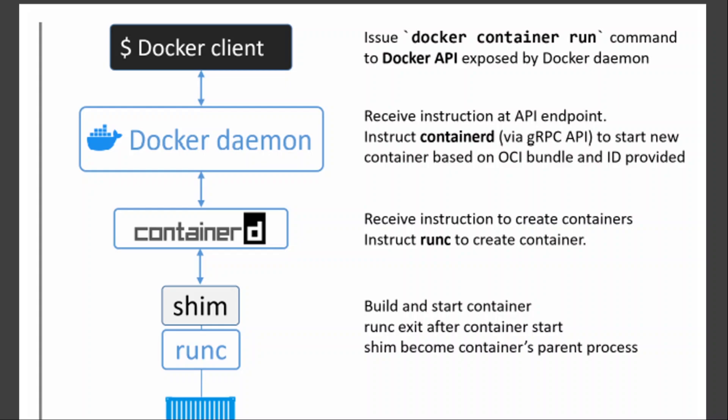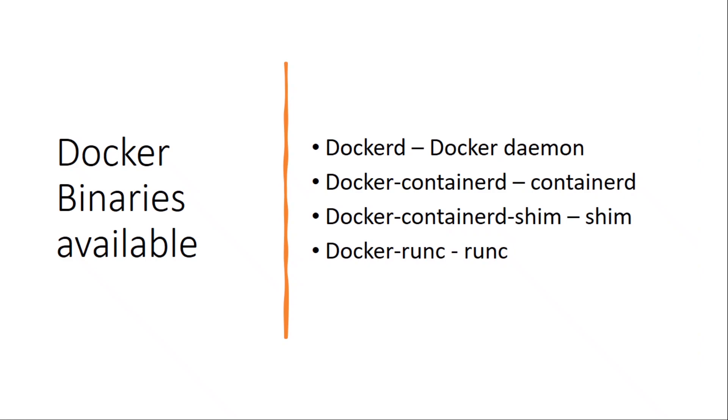Containerd receives the instruction, and to create the container it sends the request to runc. Runc builds and starts the container, then exits after the container is started and gives back control to the shim. The shim then manages the streams for the container and notifies containerd or the Docker Daemon of any status changes. This is how the Docker Engine interprets a simple docker run command.